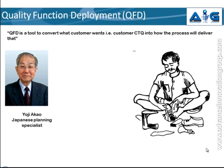Quality Function Deployment was developed by the famous Japanese planning specialist Yoji Akao in 1966. At that point in time, most companies in Japan were using statistical approaches to improve the quality of their products. But Mr. Akao was willing to develop a quality assurance method that would design customer satisfaction into a product before it was manufactured.